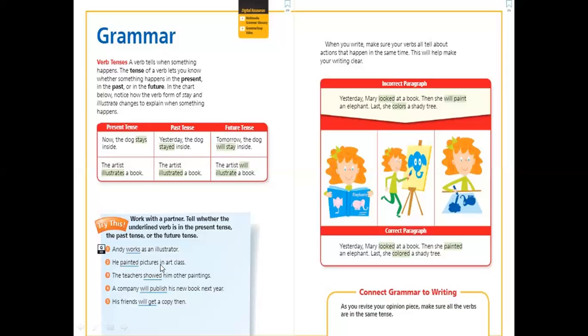He painted pictures in art class. Painted here is past or present? Yes, past, because I'm using ed. So when I add d, ed, or ied to the verb, this indicates that I'm using the verb in the past tense. So he painted pictures in art class, this indicates past. The teacher showed him other paintings. Showed here is also past because I used ed with the verb.